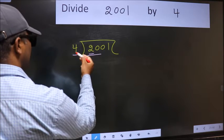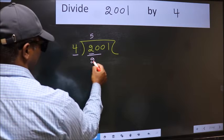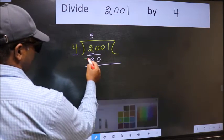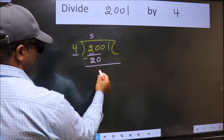When do we get 20 in the 4 table? 4 times 5 is 20. Now we should subtract 20 minus 20, 0.